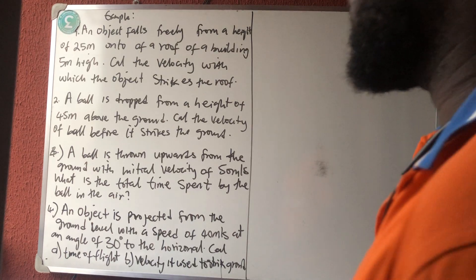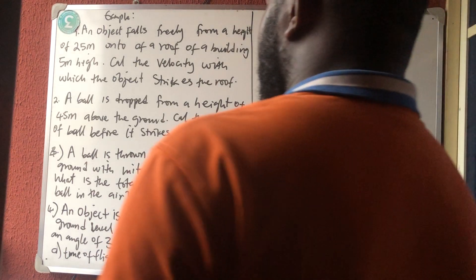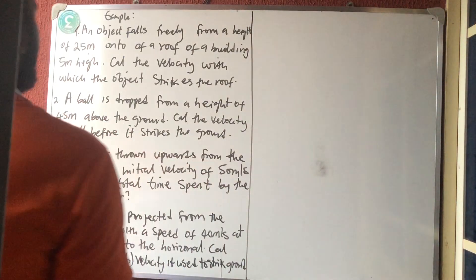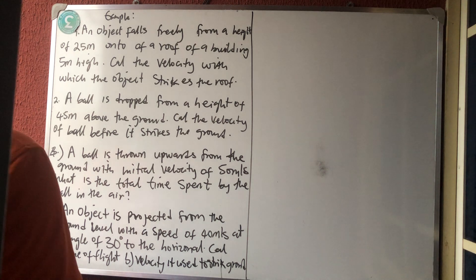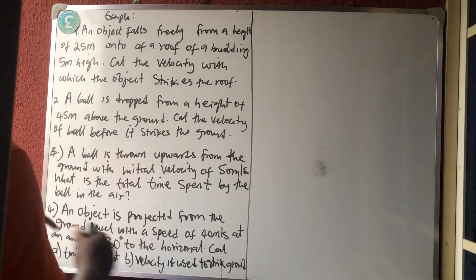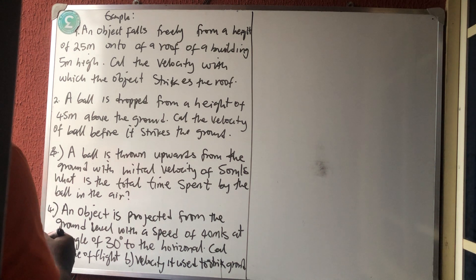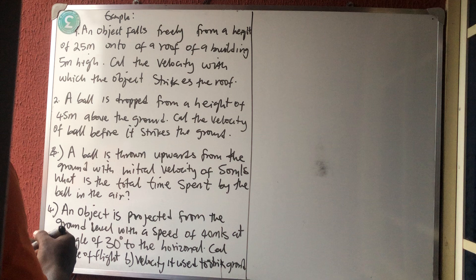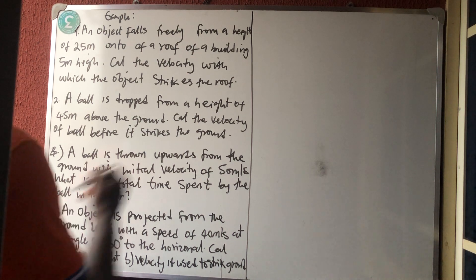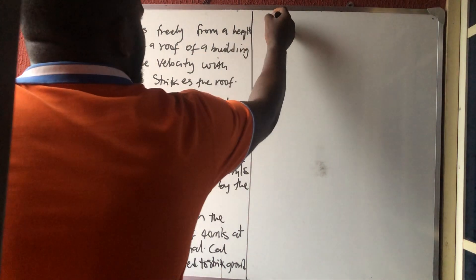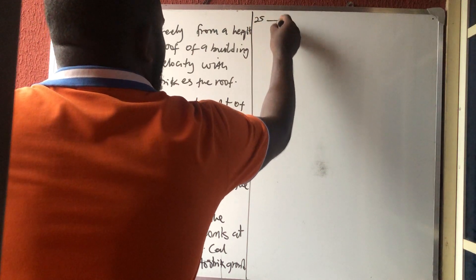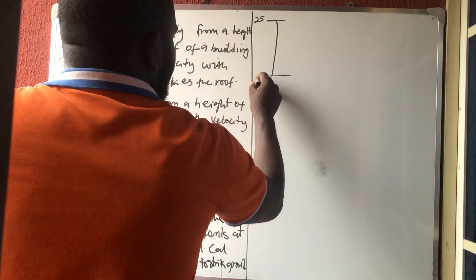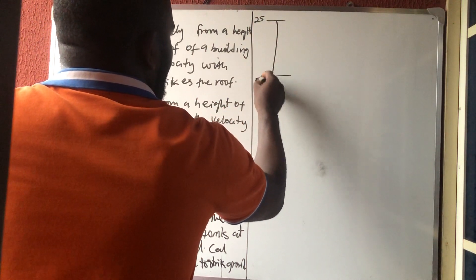Let's solve this simple projectile problem. The first one says that an object falls freely from a height of 25 meters on top of a roof of a building that is 5 meters high.